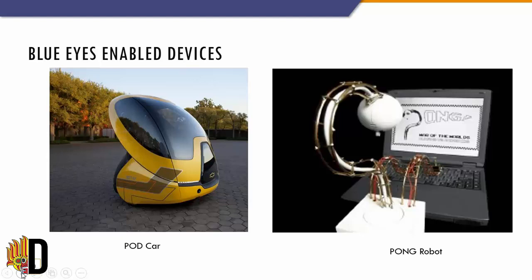Next is the Pong Robot, released by IBM with Blue Eyes Technology. This robot is capable of perceiving a person standing in front of it, smiling when the user calls its name, and expressing loneliness if it cannot see the user.